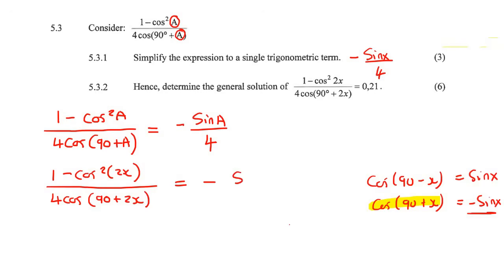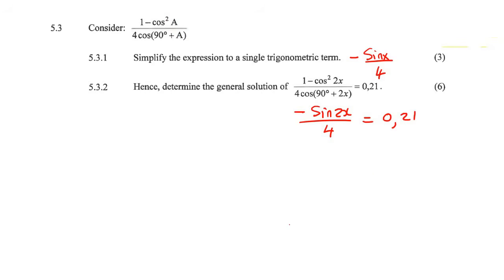So then we can say that 1 minus cos squared of 2x over 4 cos 90 plus 2x. We can then change that to minus sin. Now you just copy the angle. So if this was a and this one's a, now this one's 2x, so then this one also becomes 2x over 4. So that's what we can change this part into. So we can rewrite this equation now as minus sin 2x over 4 equals to 0.21. And now this just becomes a whole brand new general solution question. So what we need to do is we need to try to get this sin 2x by itself. So what I would do first, I'll take this 4 and I'll multiply it across. So that's going to end up giving us negative sin 2x equals to 0.84. Then this negative, we can divide by that negative, so it becomes sin 2x equals to negative 0.84.